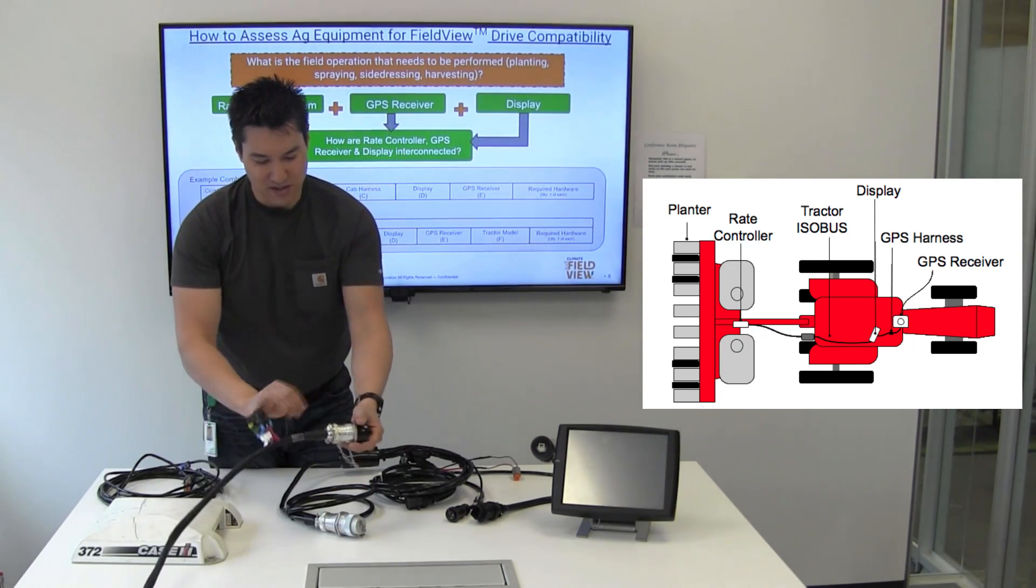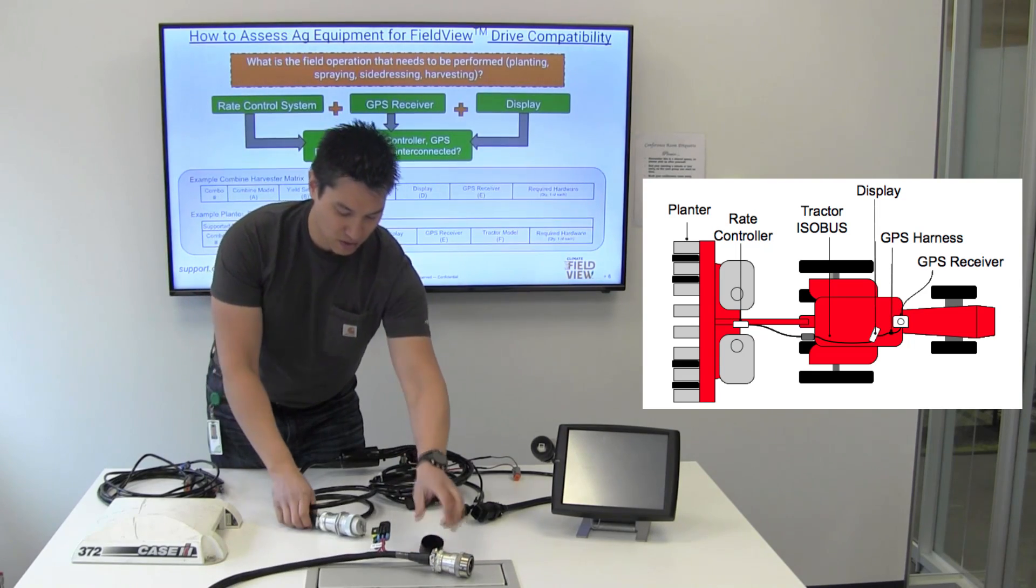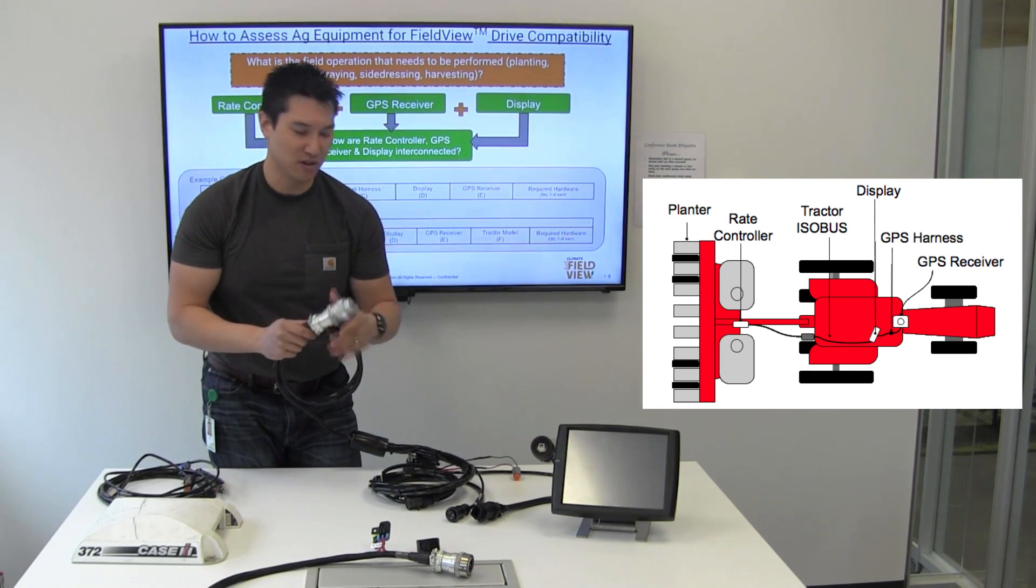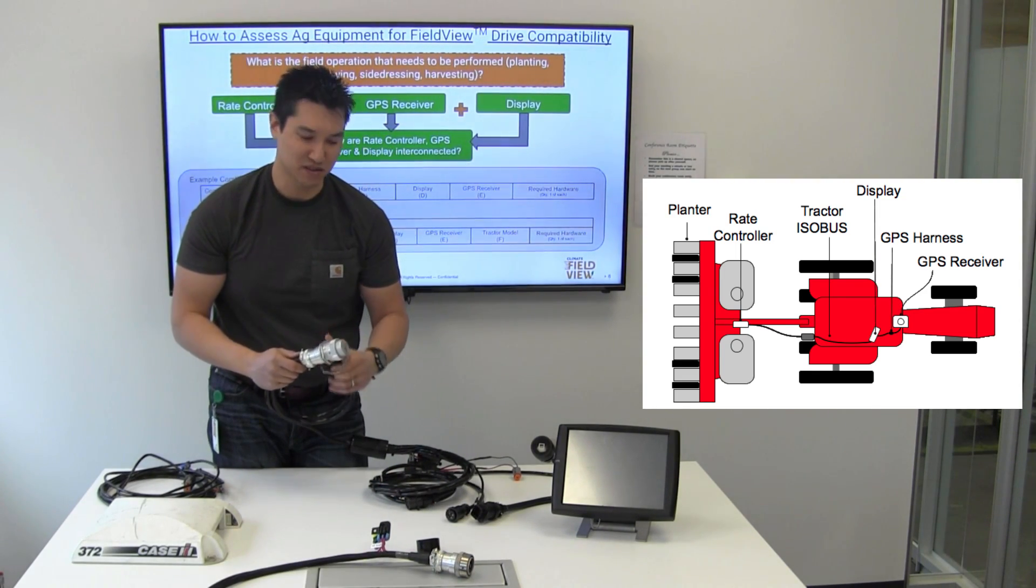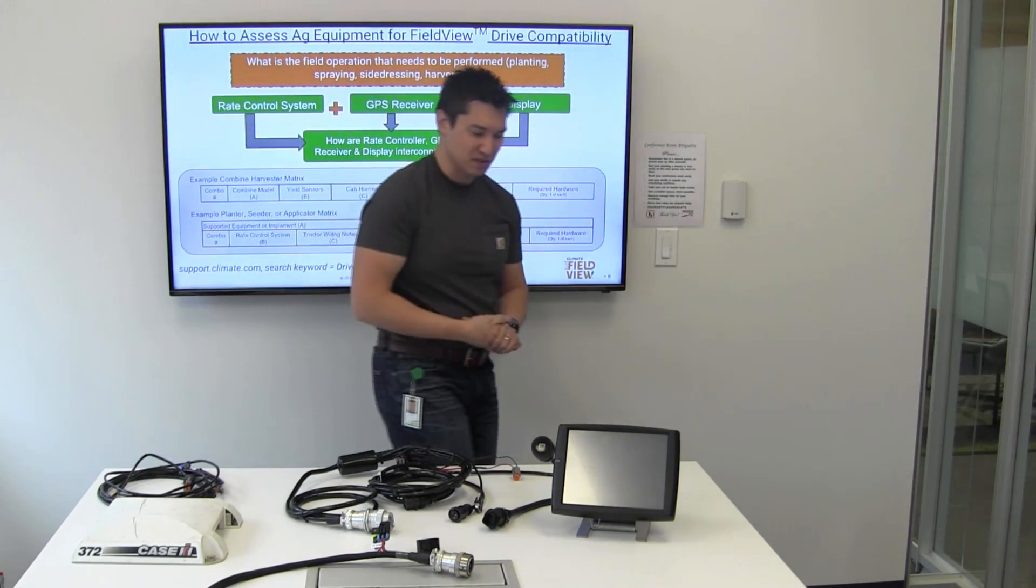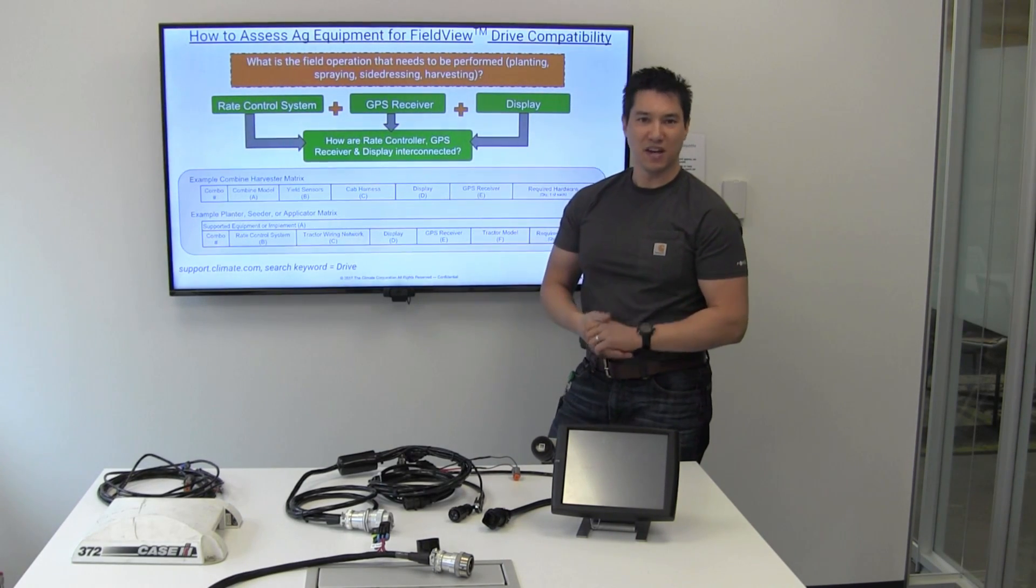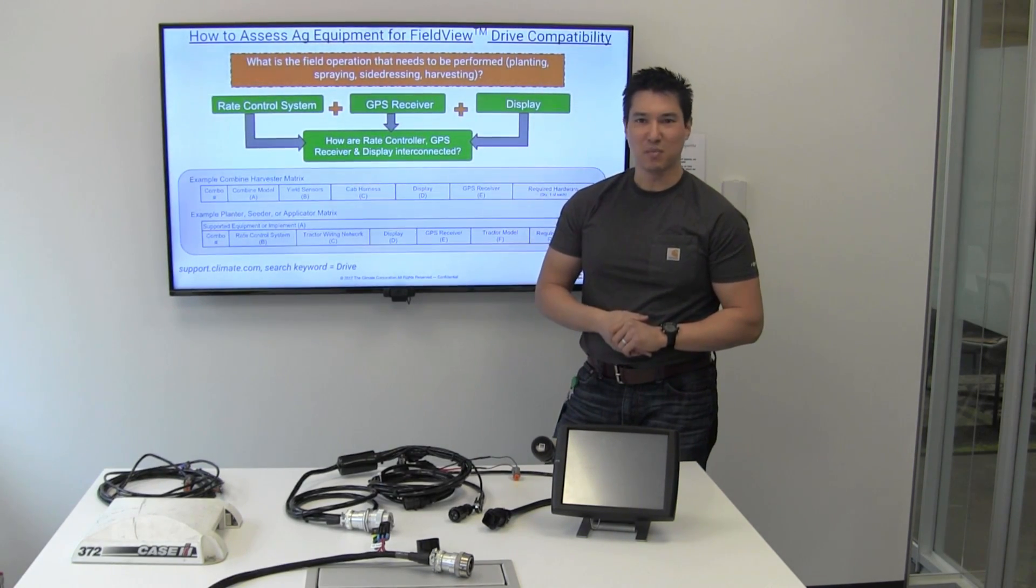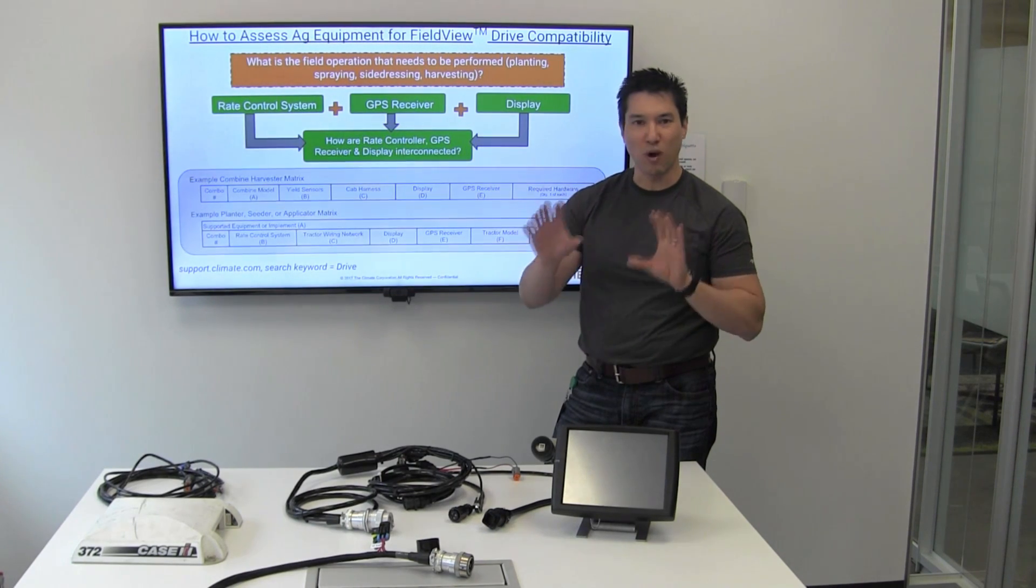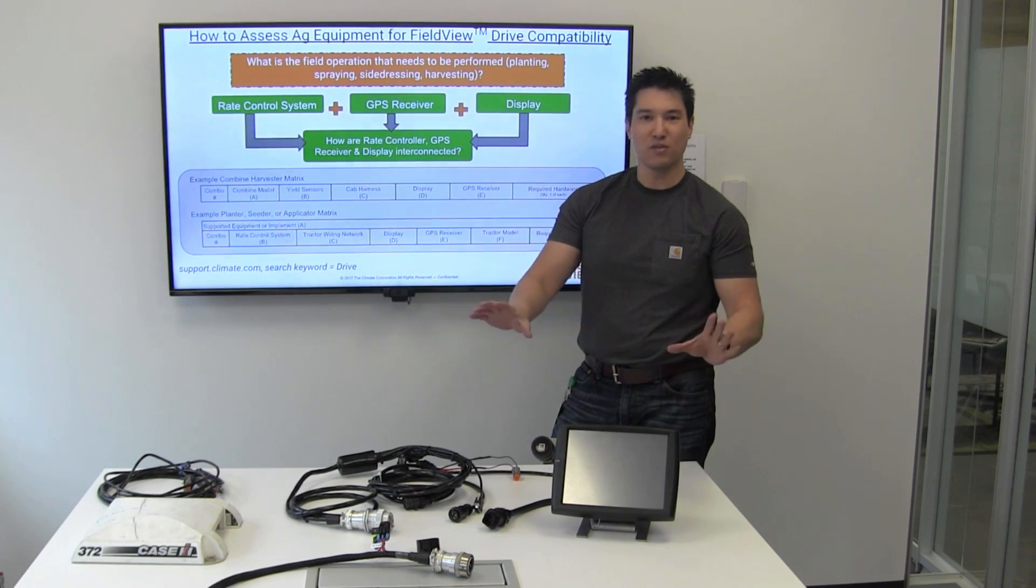That implement harness is equipped with an implement breakaway plug, which will then connect to an implement breakaway coupler on the tractor isobus system. There's a couple different types of tractor isobus systems that you'll find. Most modern day tractors are equipped with an isobus system at the factory. Basically, what that means is all of the wiring, the plugs, all the connectors are already pre-installed on the vehicle. You don't have to worry about it.